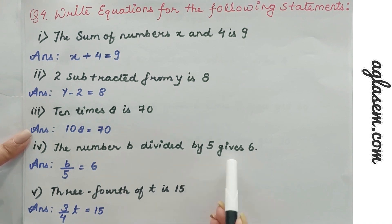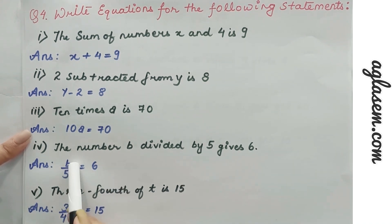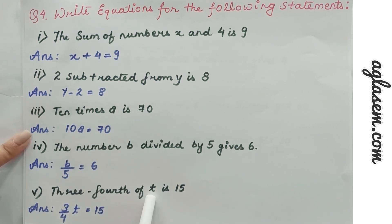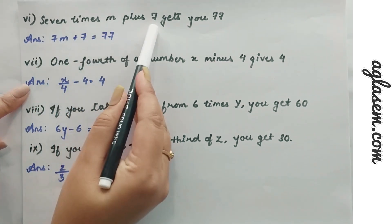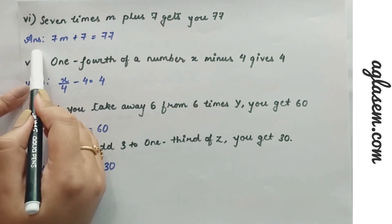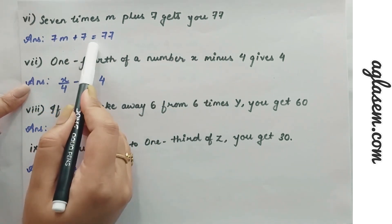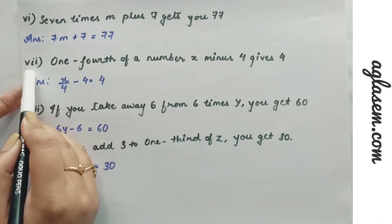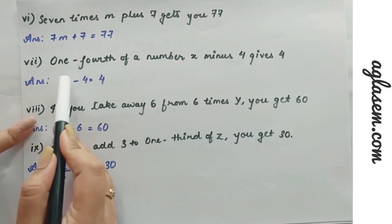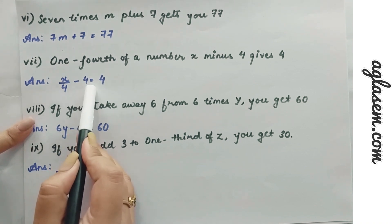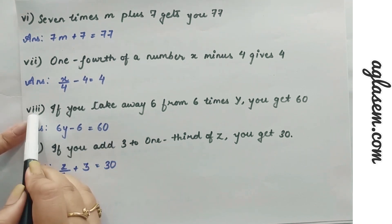Fourth: the number b divided by 5 gives 6, the equation is b/5 = 6. Fifth: 3 fourths of t is 15, the equation is (3/4)t = 15. Sixth: 7 times m plus 7 gets you 77, so the equation is 7m + 7 = 77. Seventh: one fourth of a number x minus 4 gives 4, the equation is x/4 − 4 = 4.